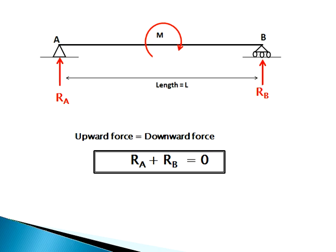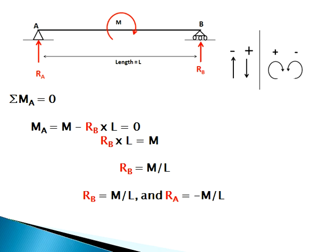Here Ra and Rb are reaction forces acting at points A and B respectively. Let's consider upward force equal to downward force — Ra plus Rb equals zero. That gives us one equation, but we have two unknowns, so we need one more equation.